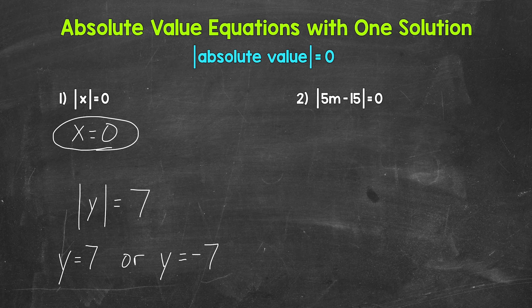We have two solutions. So keep in mind, when we have the absolute value of something and it equals zero, we have one solution because whatever is inside of the absolute value has to equal zero.